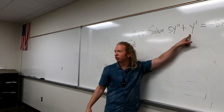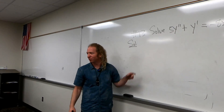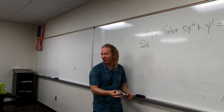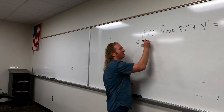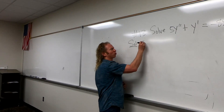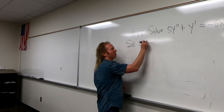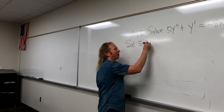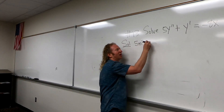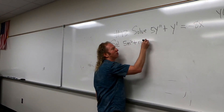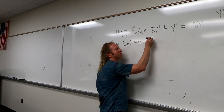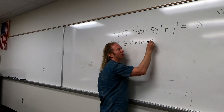The first step is to write the auxiliary equation, or characteristic equation. So we have 5m squared plus m equals 0.